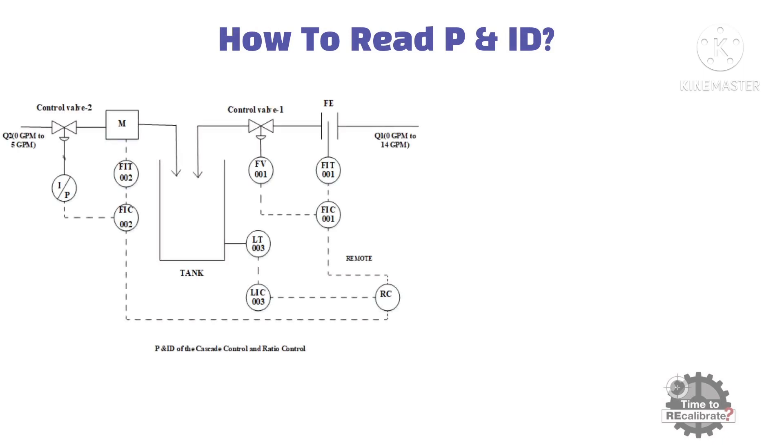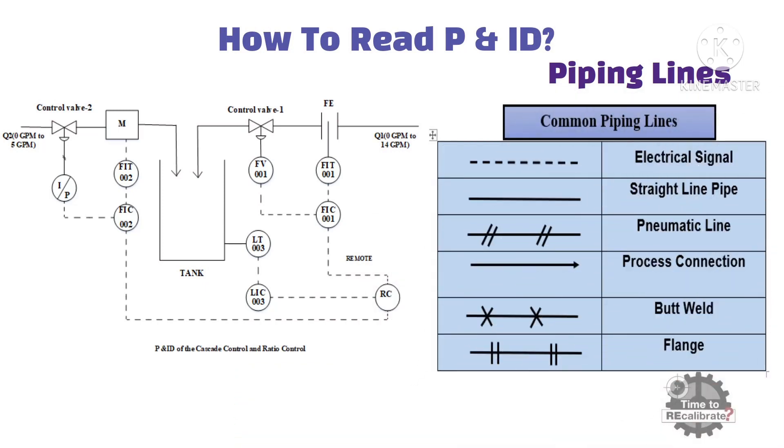Now, how to read P&ID drawing. In order to understand P&ID drawing, we need to understand piping or connection line first. As you can see from the table, these are the few common piping or connection lines which is used in P&ID drawing.